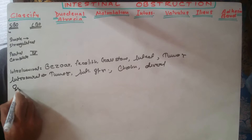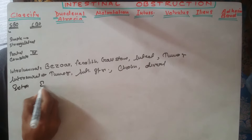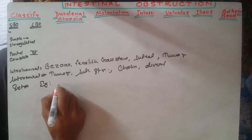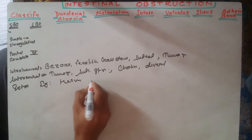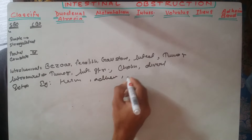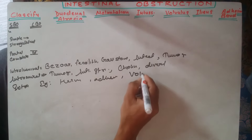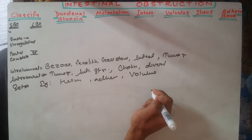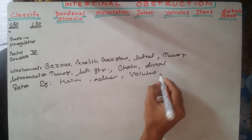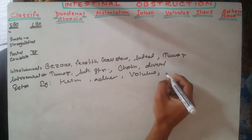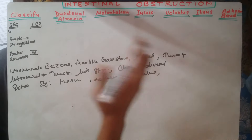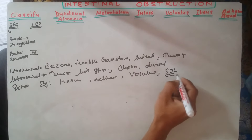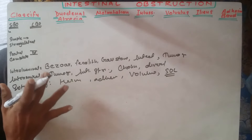Extramural causes include hernia, adhesion bands, and volvulus. Volvulus is simply twisting of the gut, usually seen in the sigmoid colon. It can also involve space-occupying lesions which can compress the gut from outside.